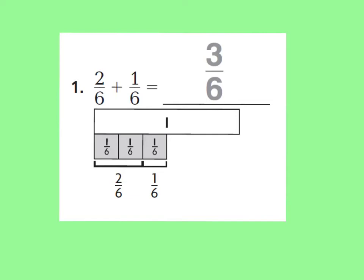So that's how they got their answer. We can look at our equation and say, well, I have like denominators, and I know that I can keep my denominator the same. I can keep it a 6. And then I just add my numerators. 2 plus 1 equals 3. So, 2 sixths plus 1 sixth is 3 sixths.